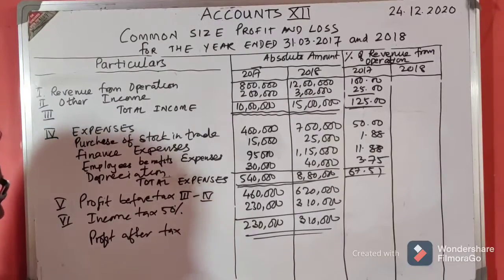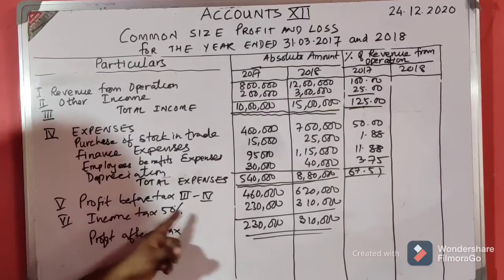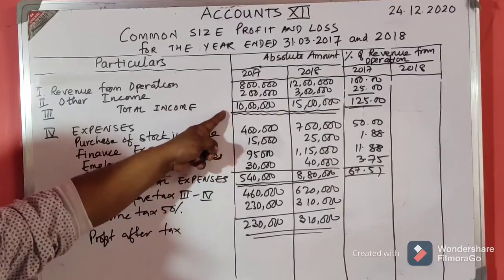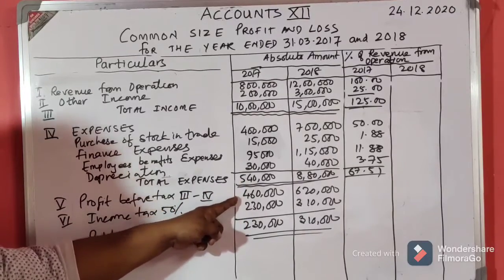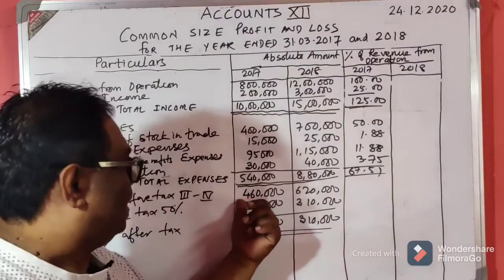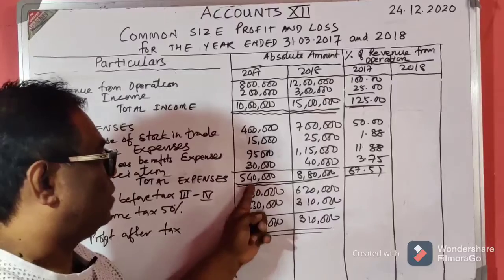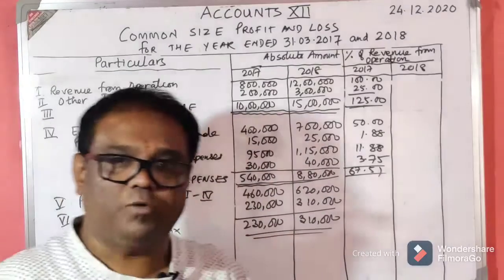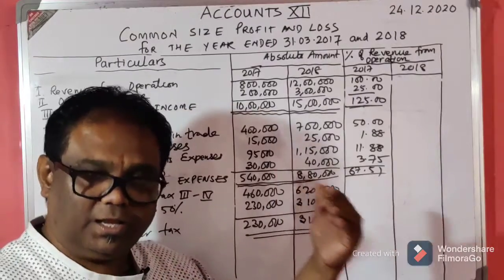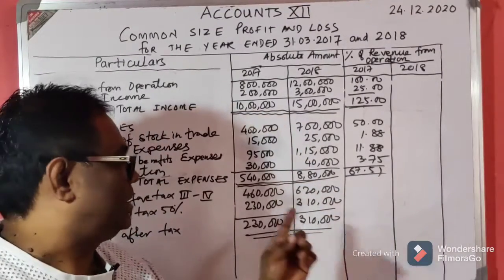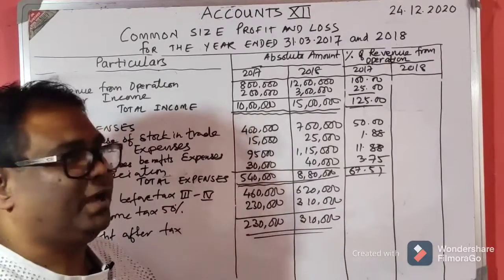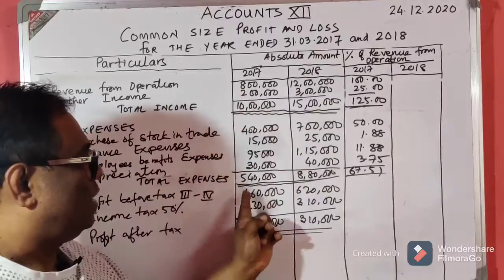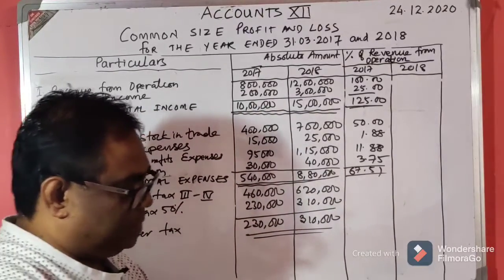Profit before tax for 2017 is 4 lakhs 60,000. This is total income of 10 lakhs minus total expenses of 5 lakhs 40,000 = 4 lakhs 60,000. Converting to percentage: 4 lakhs 60,000 divided by revenue from operations of 8 lakhs into 100 gives 57.49 percent.